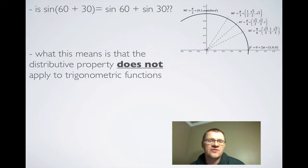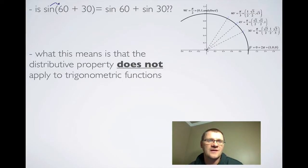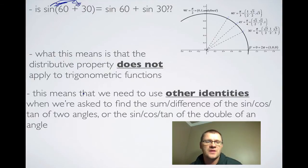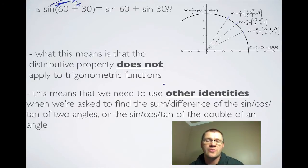What this means is that the distributive property — applying sine to both the 60 and the 30 — does not apply to trig functions. So this means that we need to use other identities when we're asked to find the sum and difference of sine, cos, or tan of two angles, or the sine, cos, or tan of a double angle.